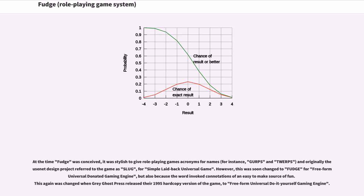At the time Fudge was conceived, it was stylish to give role-playing games acronyms for names, for instance GURPS and TWERPS. Originally, the Usenet-designed project referred to the game as SLUG, or Simple Laid-back Universal Game. However, this was soon changed to FUDGE for Freeform Universal Donated Gaming Engine, also because the word invoked connotations of an easy-to-make source of fun. This was changed again when Grey Ghost Press released their 1995 hard-copy version to Freeform Universal Do-It-Yourself Gaming Engine.